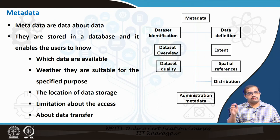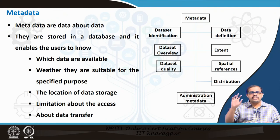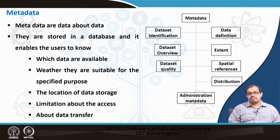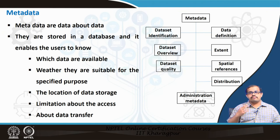Metadata basically says: which data is available, whether it is suitable for a specific purpose — there are data created for a generic purpose and data very specific to a specific purpose, so you have to mention that. Then the location of data storage, how and where the data is stored, and then limitations about access if any, and information about data transfer — all have to be mentioned in the metadata.